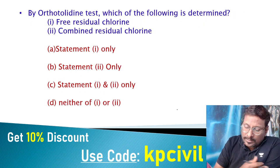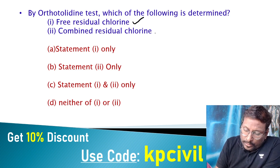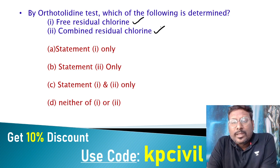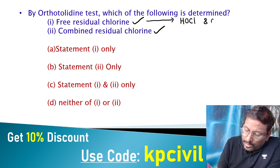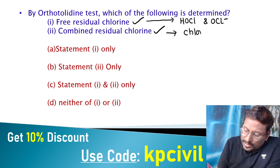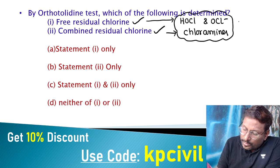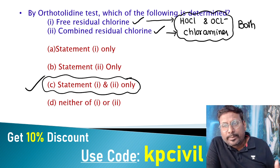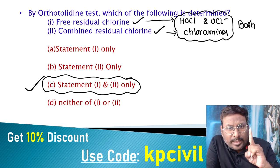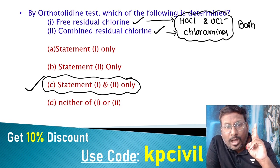The orthotolidine test is used to find out both free residual chlorine and combined residual chlorine. Free residual chlorine includes HOCl and OCl⁻. Combined residual chlorine is chloramines. Orthotolidine test finds both. Residual chlorine — whether free or combined — can be estimated by the starch-iodide test or the orthotolidine test.